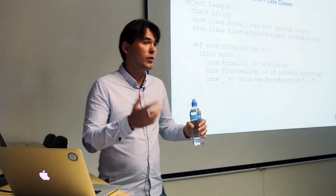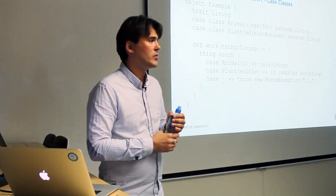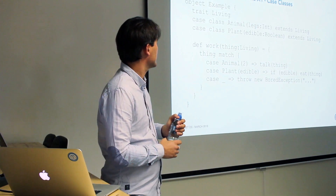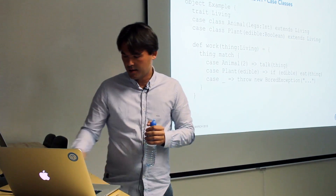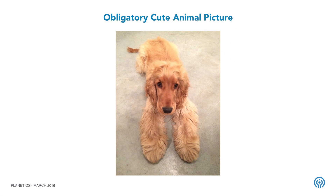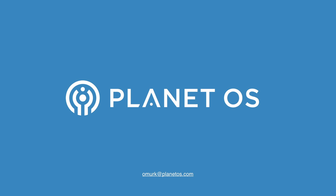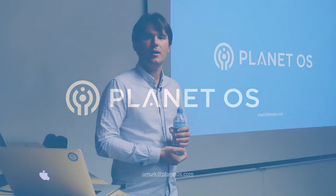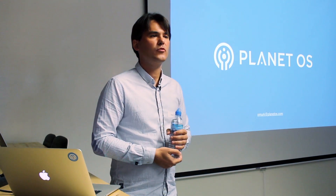So we are done with all the boring and introductory stuff. Now everybody knows everything you need to listen to the real presentations. I have a final obligatory cute animal picture — it's our co-worker's dog and he decided to call his Scala. That's pretty much it. Any comments, suggestions, questions? Any new Scala converts?